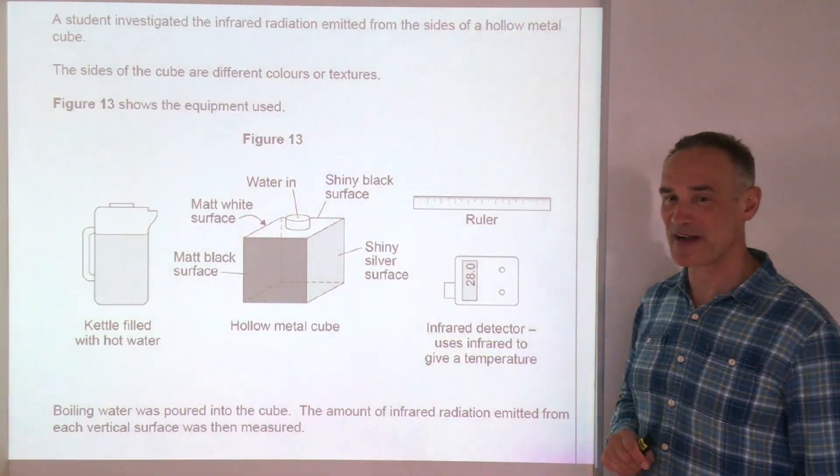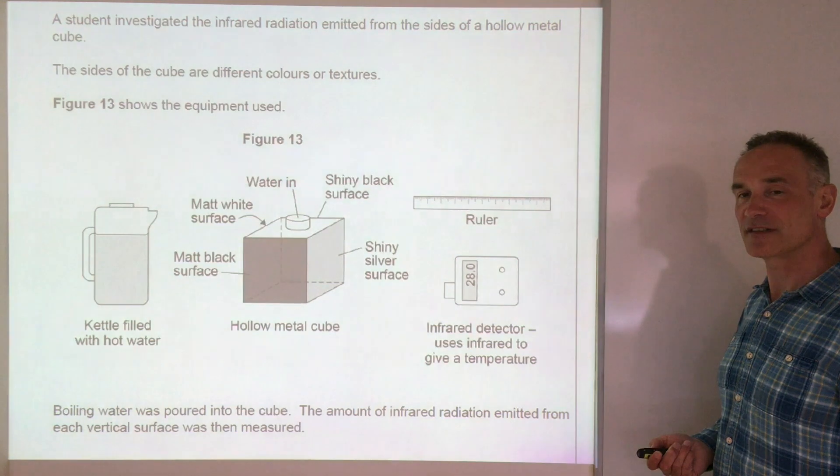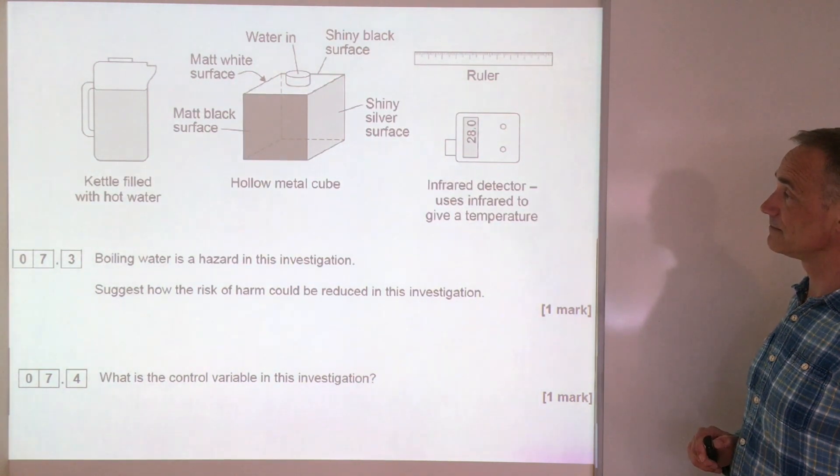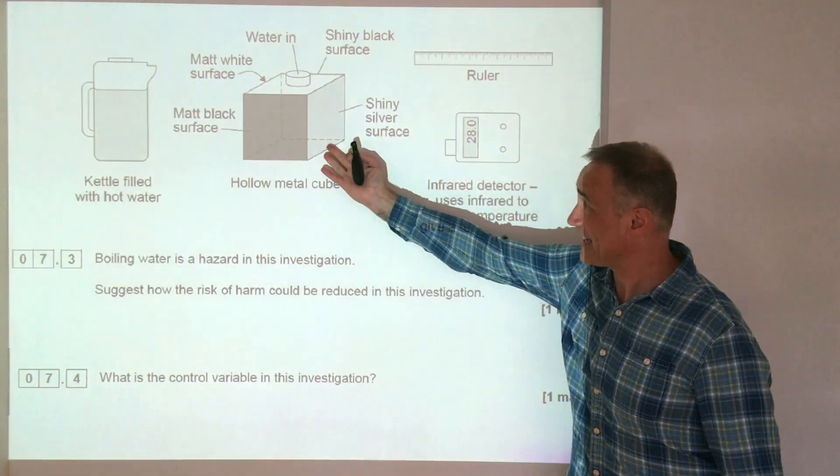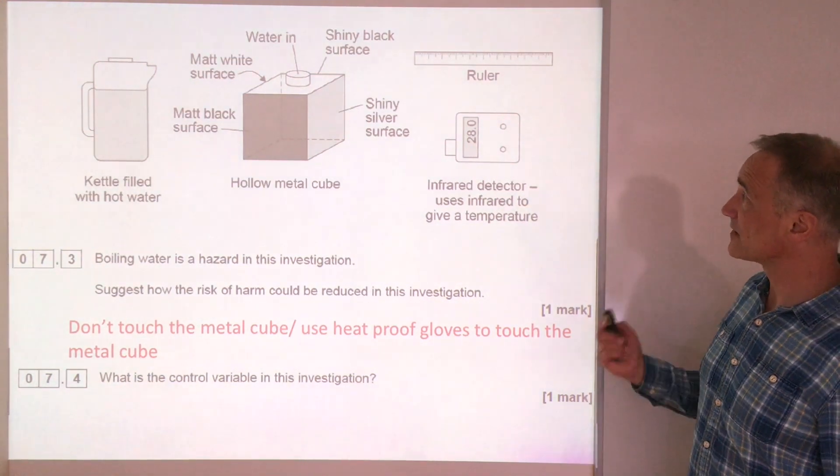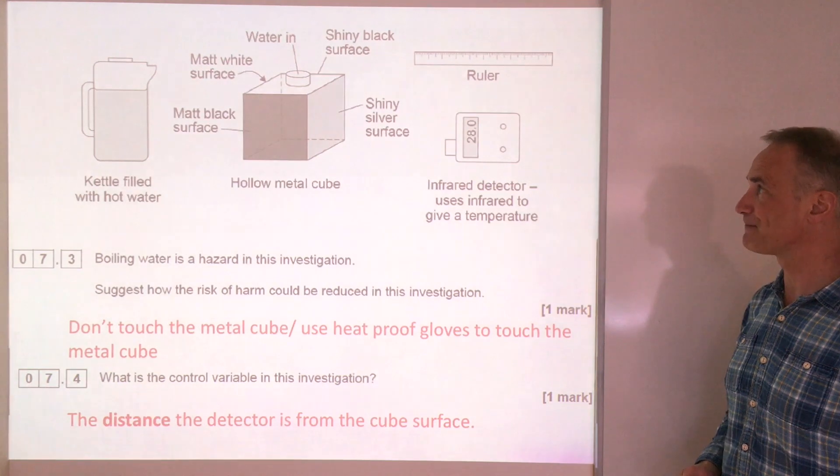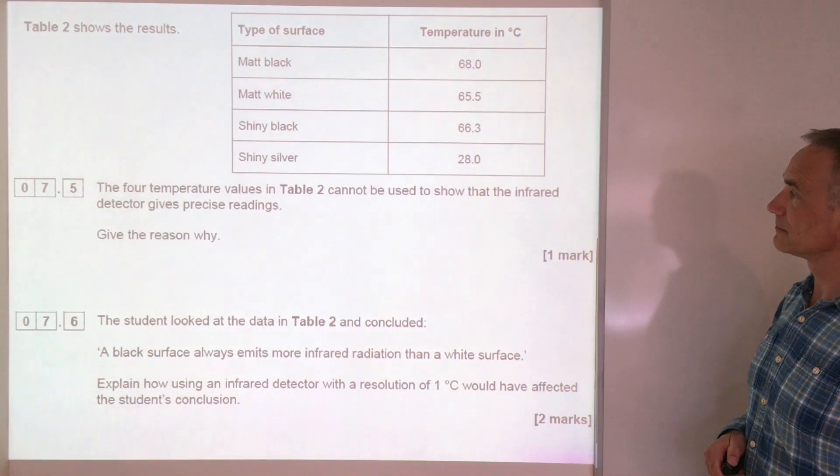Now this was the practice I was talking about earlier, and you can see how they're using it in the exam paper. Have a read of this, then I'll click on the questions and then go through the answers. The first one, suggest the risk of harm. This is a one mark question. It's quite easy. The only harm is going to be the heat from this, so don't touch it. What's the control variable? We discussed that earlier. It's the distance between the detector and the cube. Make it clear what the distance is between.